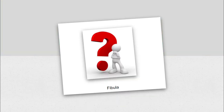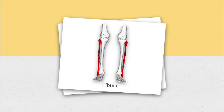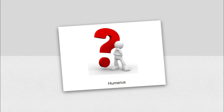Moving on to the next one: the fibula. It sounds similar to the tibia, and hint hint, this bone might have been shown on the previous slide. So where do you think your fibula is located? As you can see highlighted in red, the fibula is actually located on the outside part of your leg and extends all the way down to the bottom of your foot. The fibula is actually the part of your body that forms your ankle.